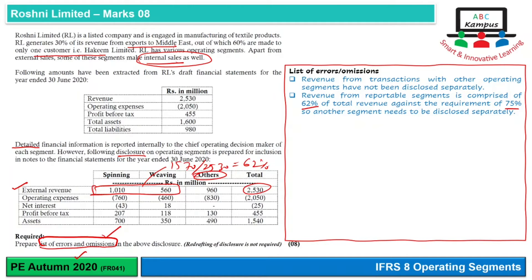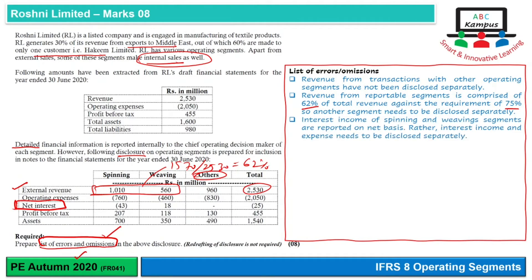Iske baad agar hum dekhte hai to interest income jo hai wo net basis per disclose ki gayi hai. Requirement yeh hai ki interest income aur expense ko separate disclose karna hota hai. So interest income of spinning and weaving segments are reported on net basis, rather interest income and expenses need to be disclosed separately.